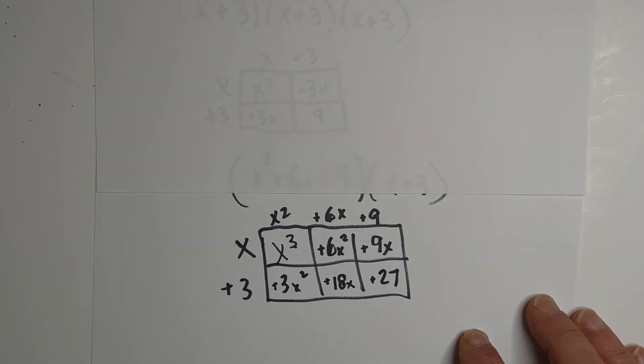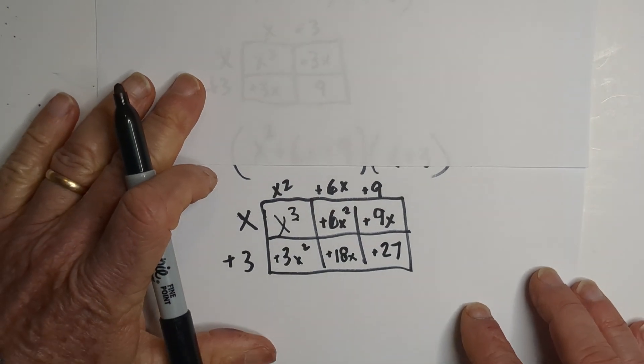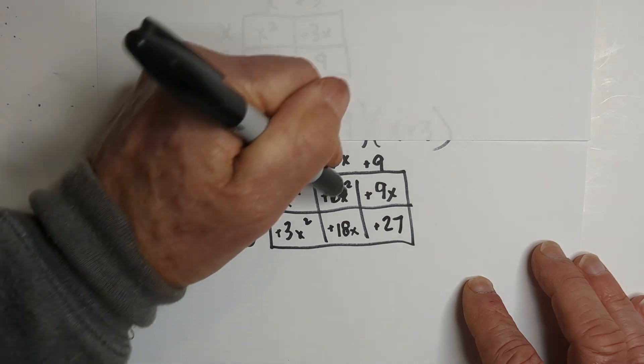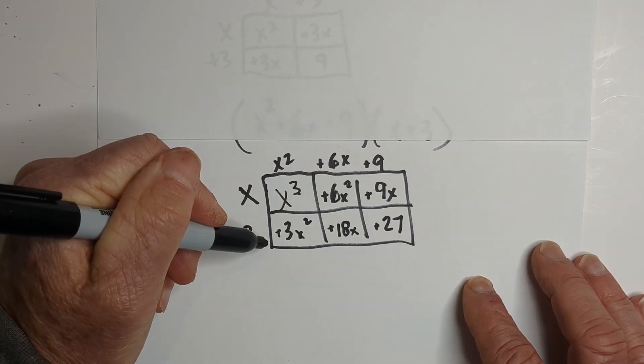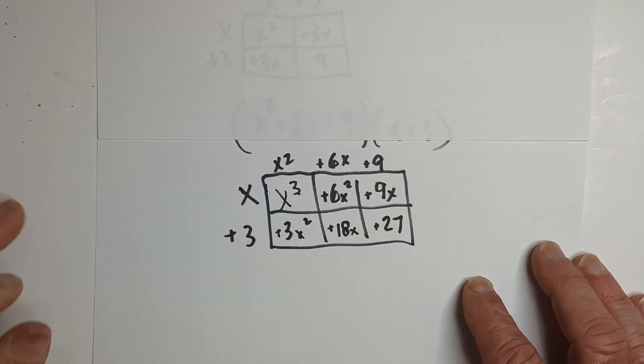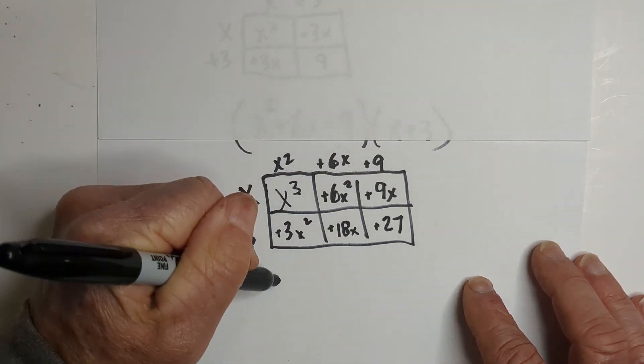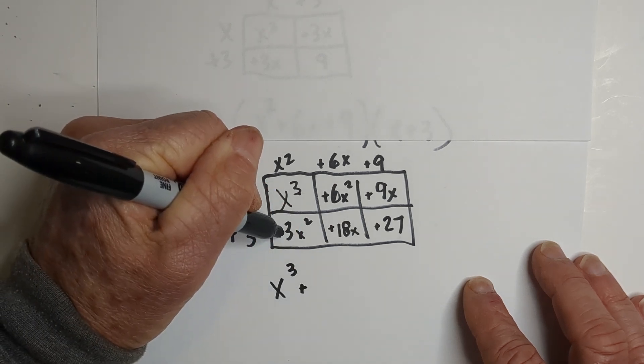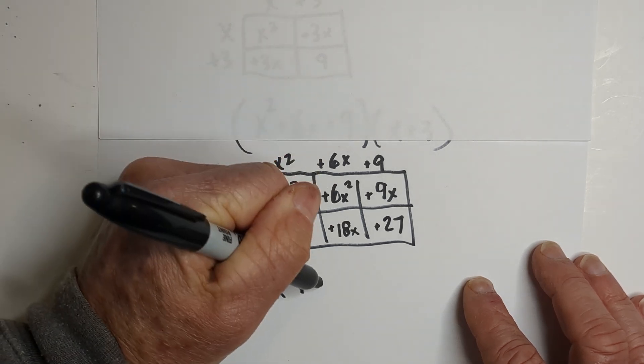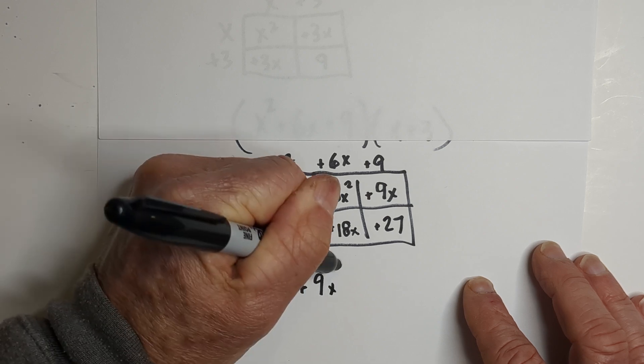And again, we combine like terms. With this one, these two boxes - if you did the math correctly - should be similar terms, and these will be like terms also. So now we have x cubed plus 3x squared and 6x squared is 9x squared.